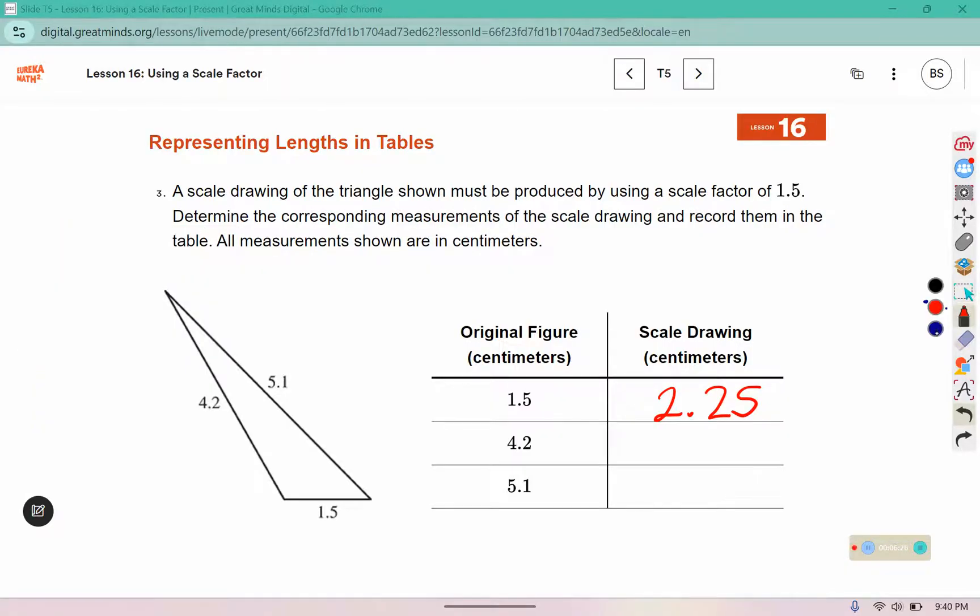Now we're going to use the next one. 4.2 times that scale factor of 1.5: 5 times 2 is 10, 5 times 4 is 20 plus 1 more is 21. Put in that spacer: 1 times 2 is 2 and 1 times 4 is 4. Zero plus zero, 2 plus 1, 4 plus 2. I see 2 decimal places in the question so put 2 in the answer.